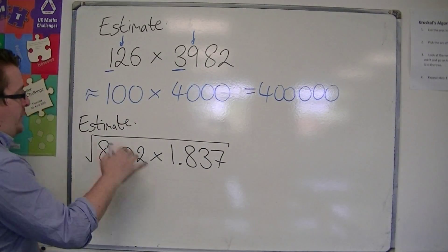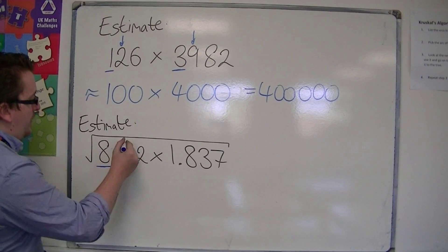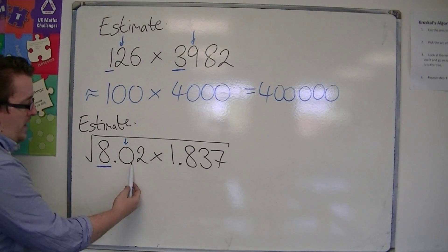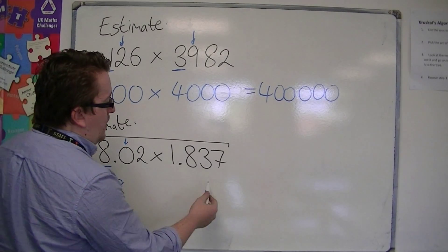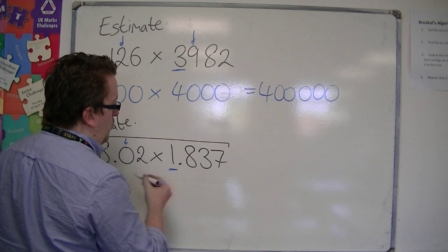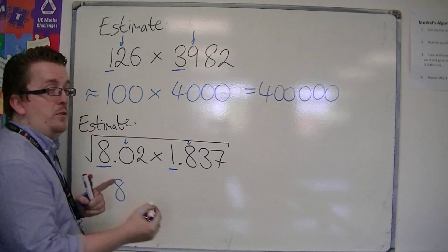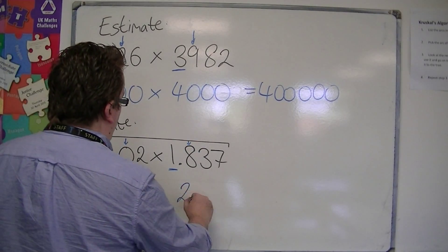So 8.02 to one significant figure, I look at one to the right of the 8, I need to round down, so I'd round that to 8. And 1.837, look at the 1, one to the right tells me to round up, so that would round to 2.